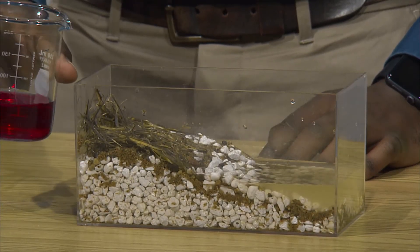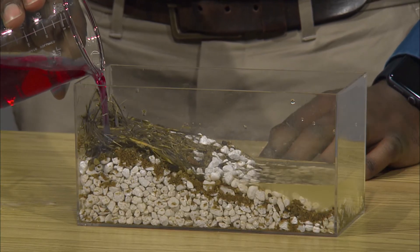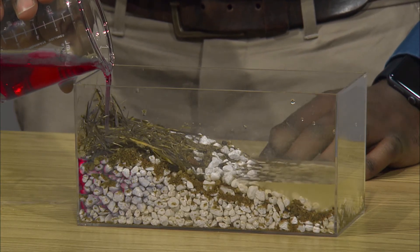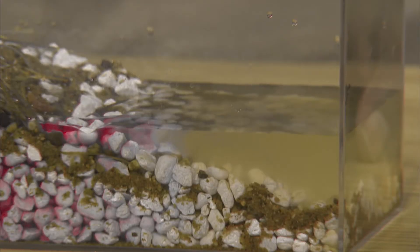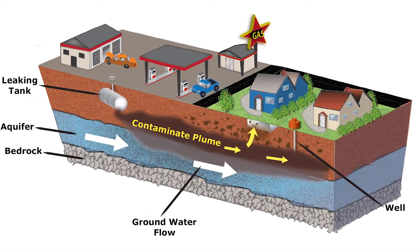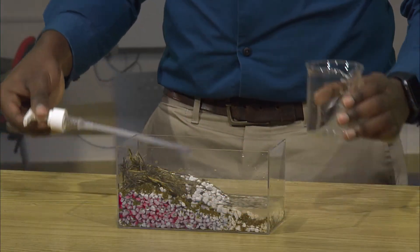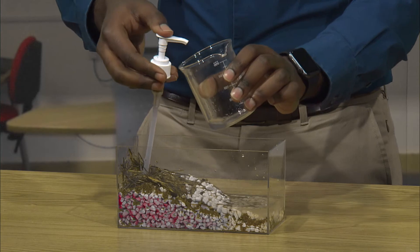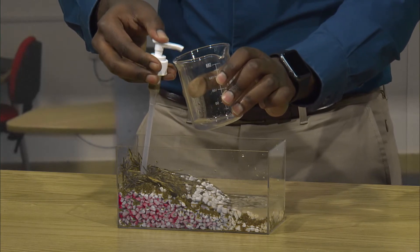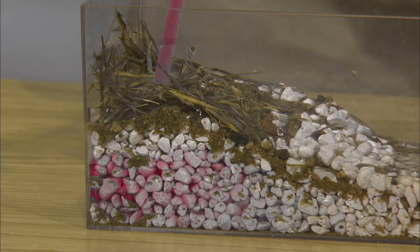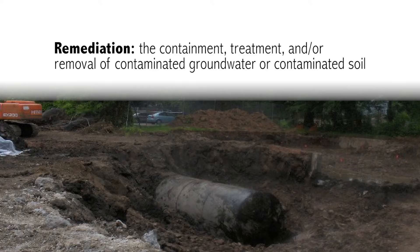Watch as I spill the contaminant using this colored water. Observe as it quickly seeps through the highly permeable gravel into the aquifer below. The contamination begins to mix and disperse in the aquifer. A concentrated flow of the contaminants is known as a contaminant plume. When I pump the well this time, I draw out contaminated water from the aquifer. Once groundwater becomes contaminated, it can be costly and difficult to remediate. The contaminants stick to the sand and gravel and get trapped in the tiny spaces between the individual grains. Remediation means the containment, treatment, and/or removal of contaminated groundwater or contaminated soil.